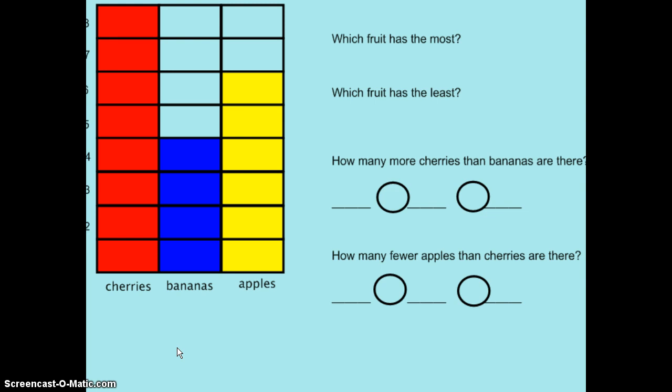Here's the bar graph again, set up the same way. You can see eight students picked cherries, four picked bananas, and six picked apples. Let's decide which fruit has the most. I can tell that cherries has the most votes because the bar goes all the way to the top and it's higher than the other fruits, so I know that cherries has the most.